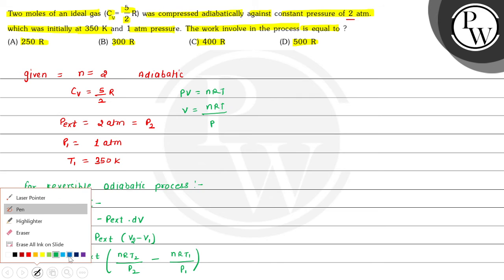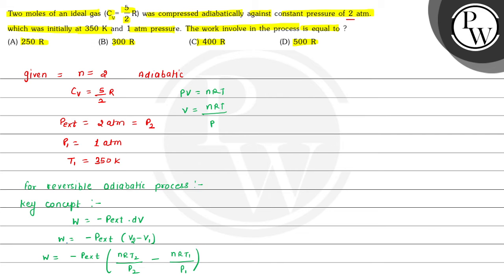Now we substitute the values. W equals minus P_external (which is 2 atm) times nR — where n is 2 multiplied by R — times (T2/P2 minus T1/P1). P2 is 2 atm, T1 is 350 K, and P1 is 1 atm. So W equals minus 2 times 2R times (T2/2 minus 350/1), which simplifies to minus 4R times (T2/2 minus 350). This is equation 1.